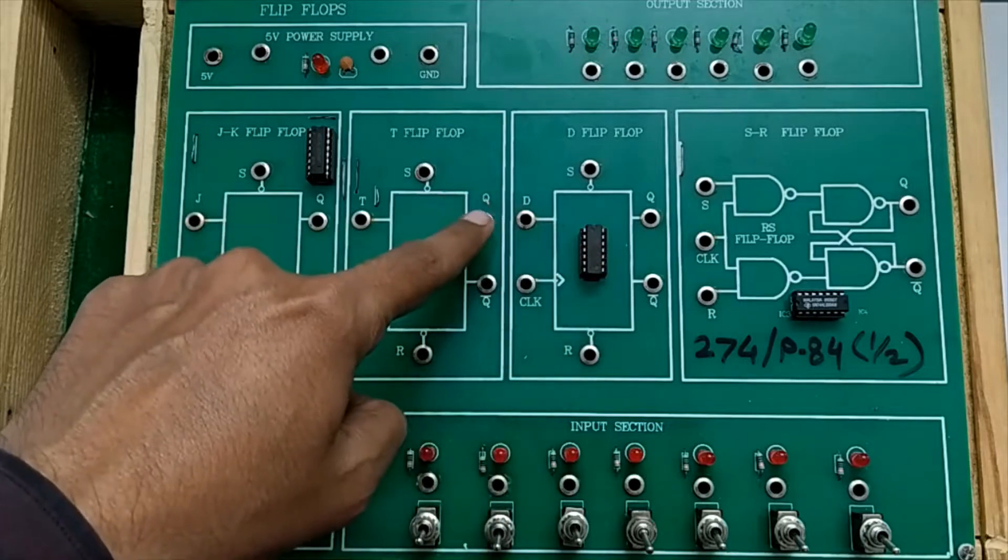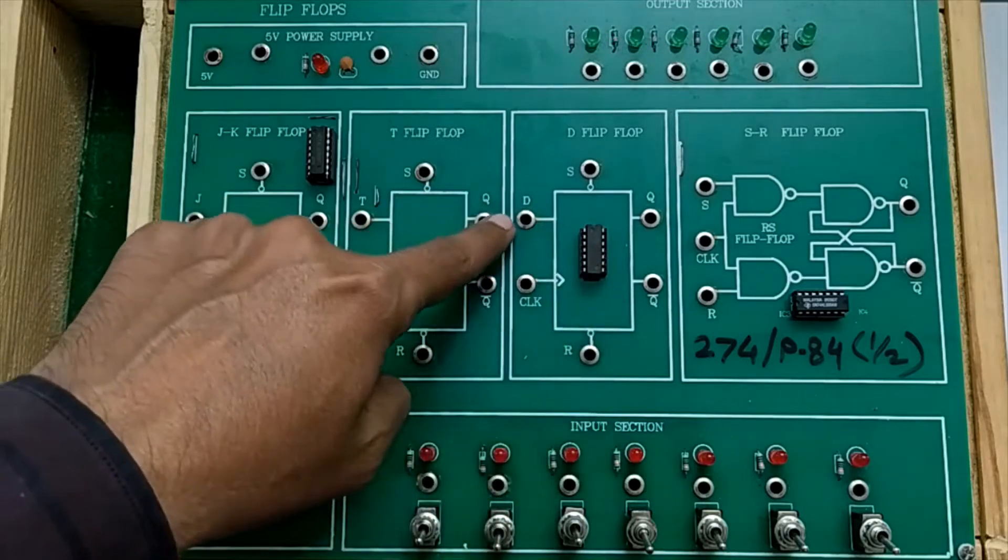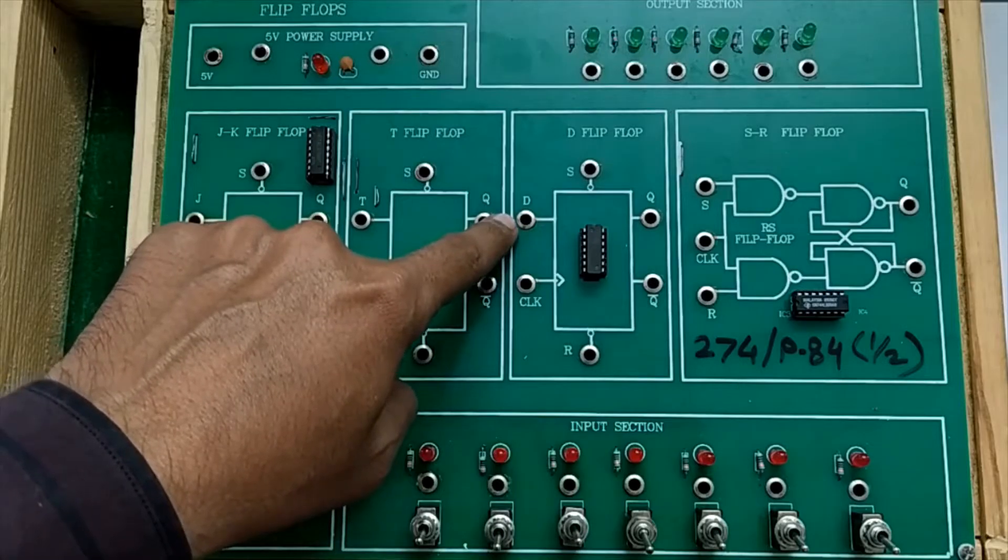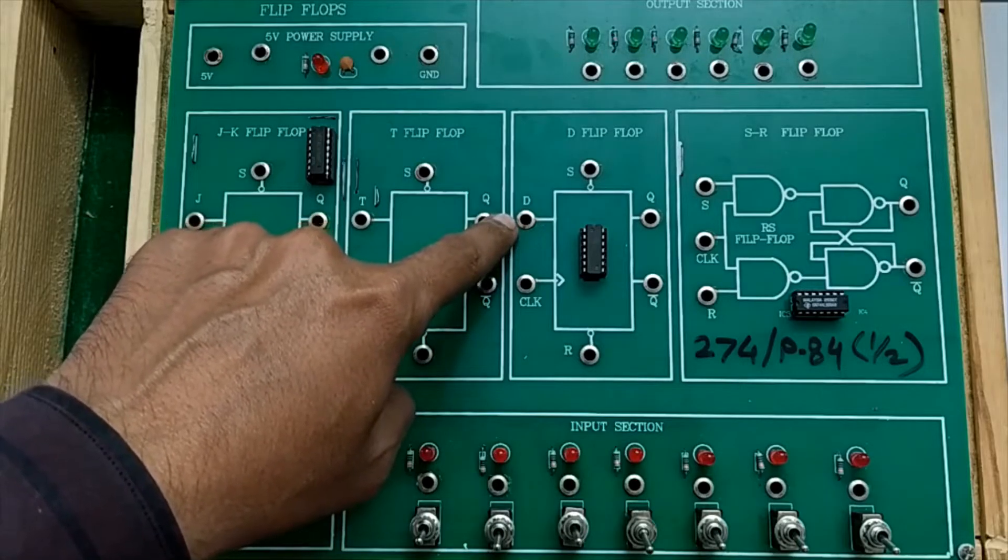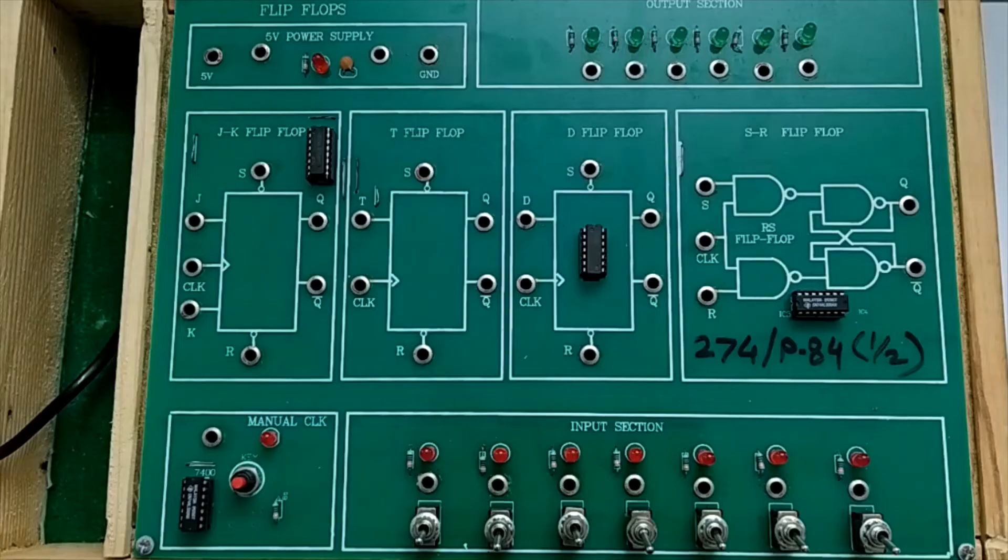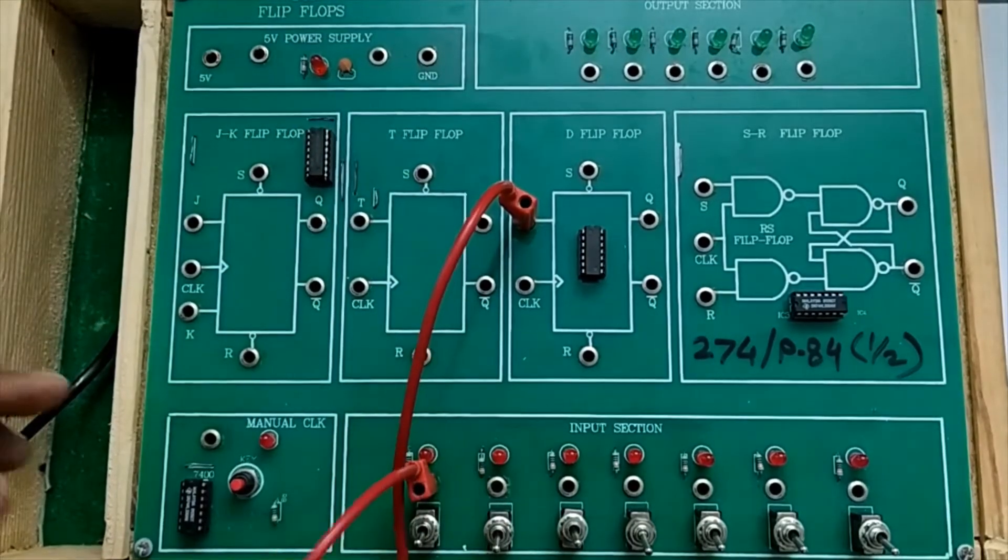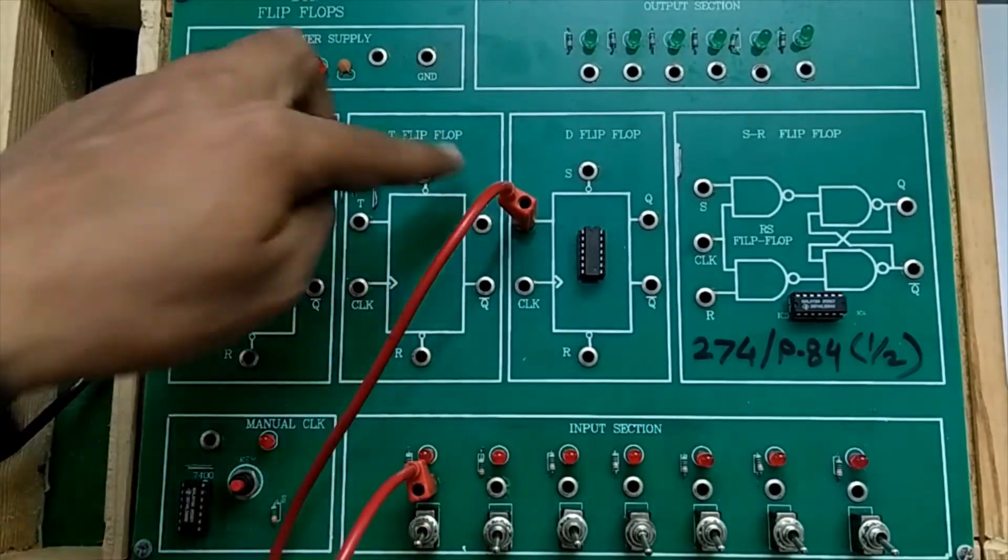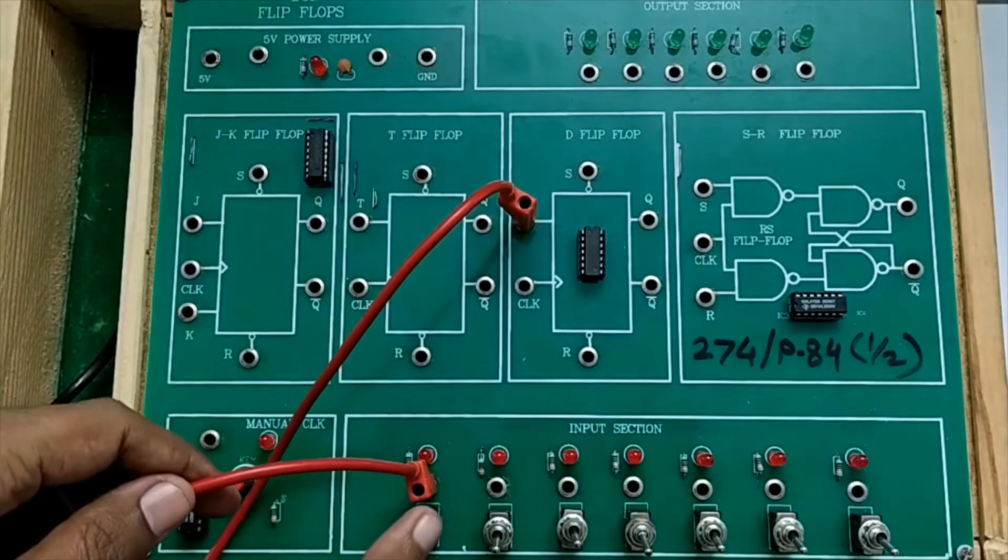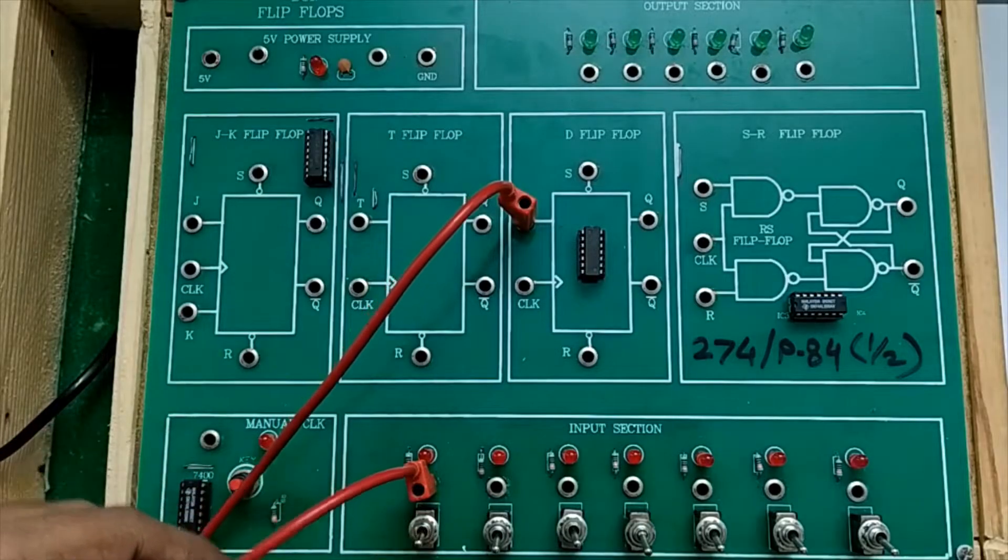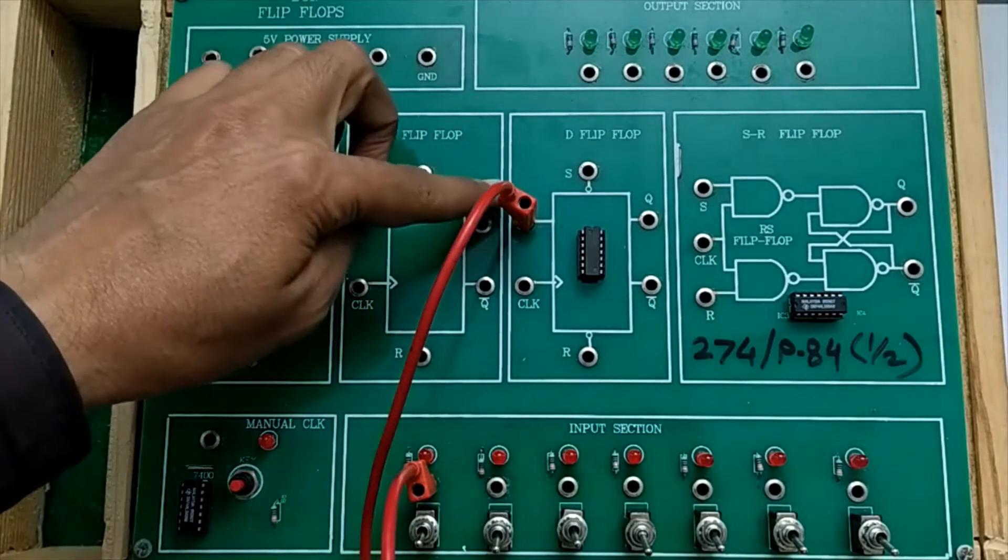There are different pins of this flip-flop. One is the D pin through which we can apply the input. Let us connect the input pin to one of the input switches. When I turn on this switch, logic 1 is applied to input. When I turn off this switch, logic 0 is applied to the D input.